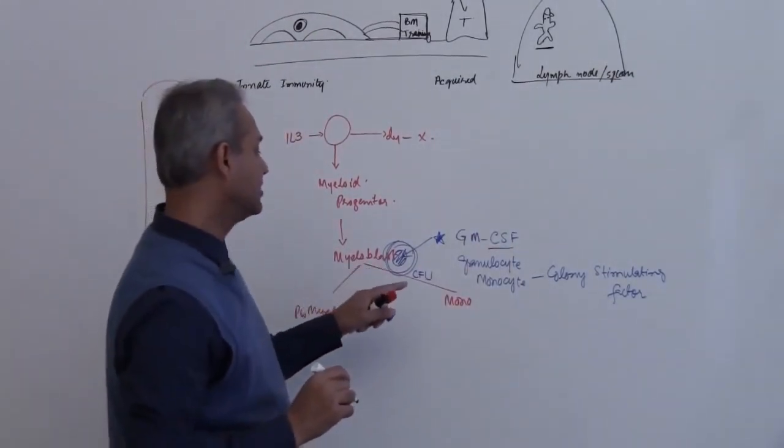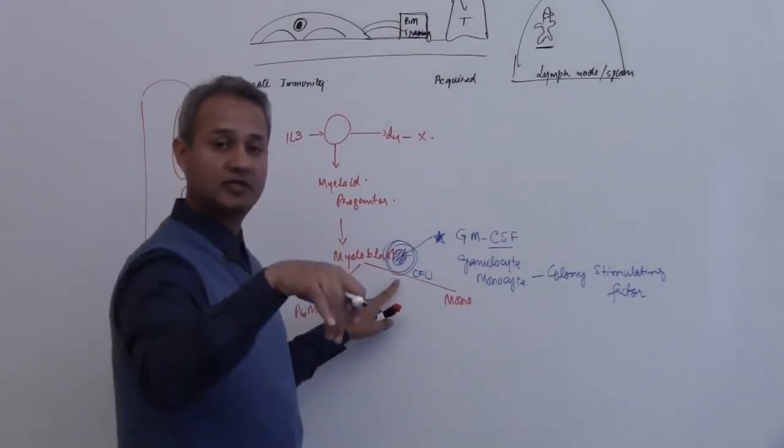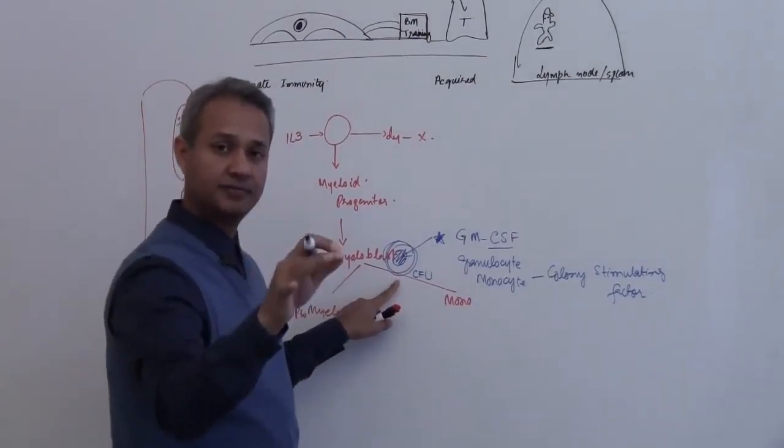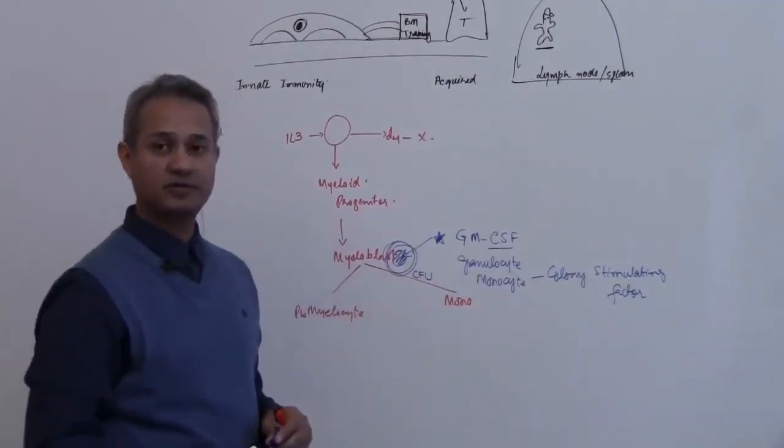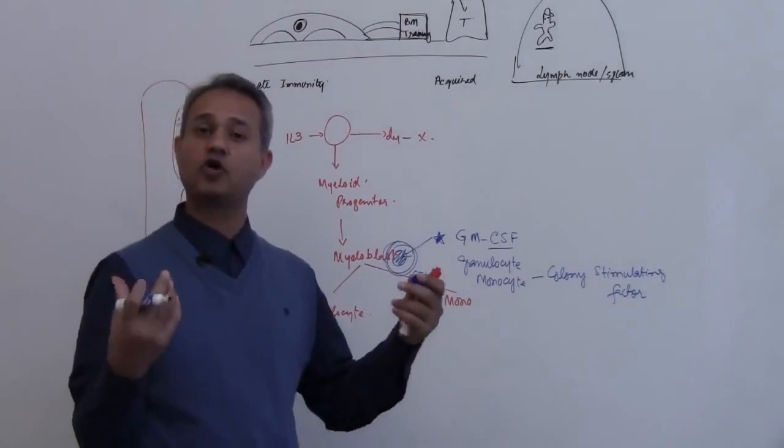What that means is if you pick up the cell, put it in a culture medium and stimulated, it is going to make a colony of cells of this type. That is why we say this is a colony forming unit.